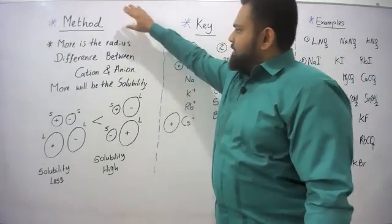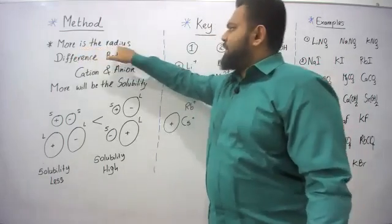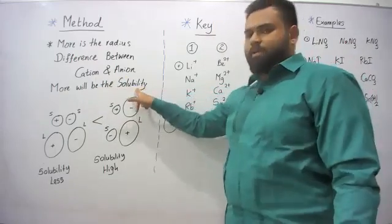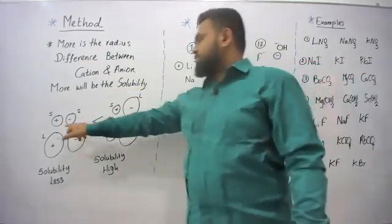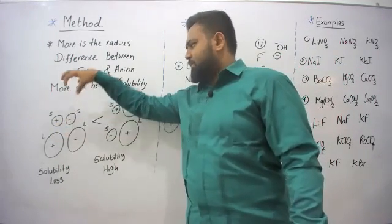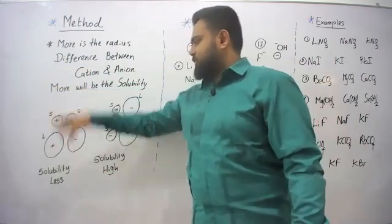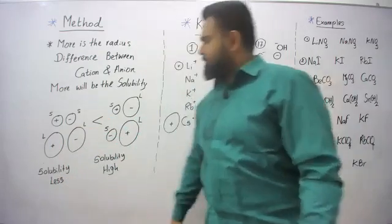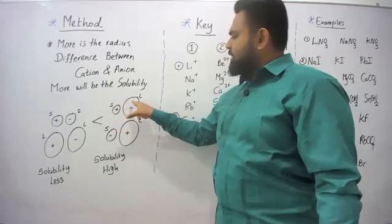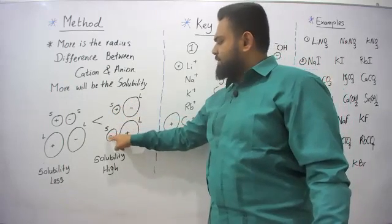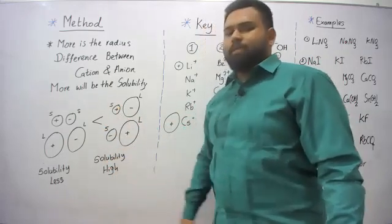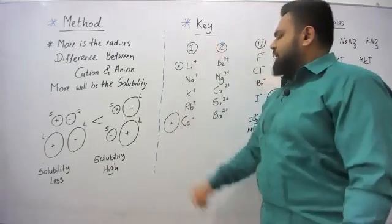Today's trick is this: the more the radius difference between the cation and anion, the more will be the solubility. If both the cation and anion of an ionic compound are small, or both are large, solubility is less. If there is variation — cation small and anion large, or anion small and cation large — the solubility is high. That is what you should memorize. This is the key.